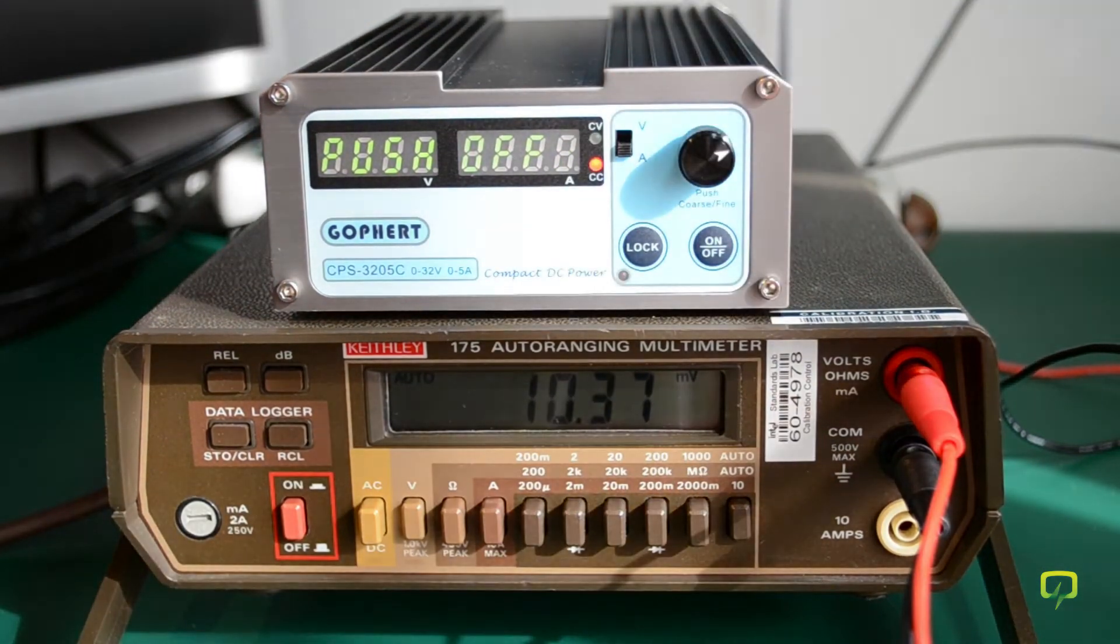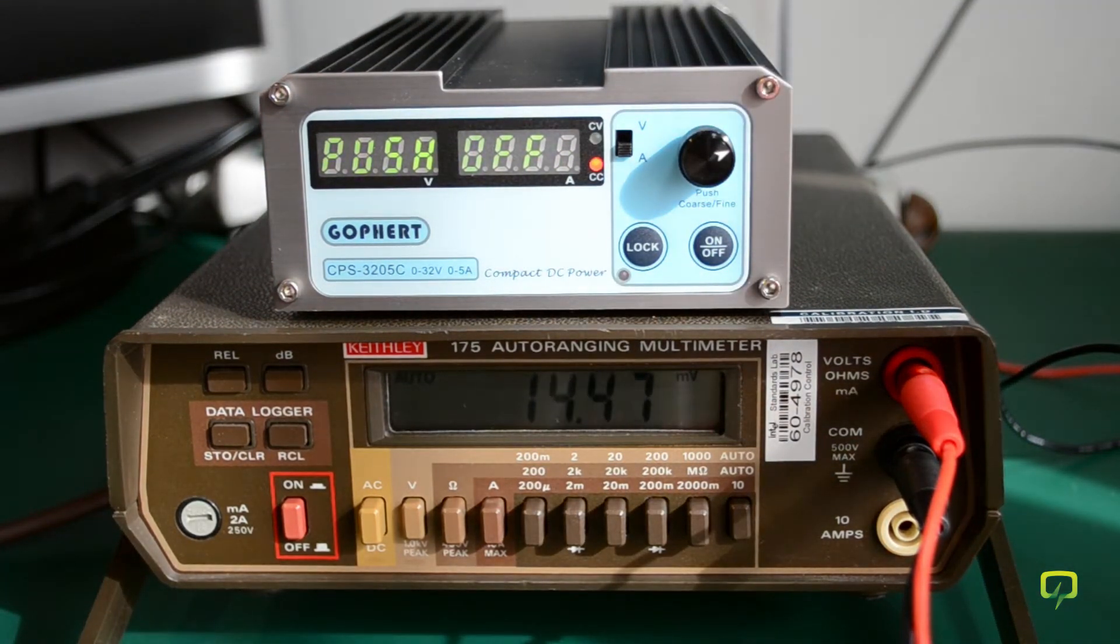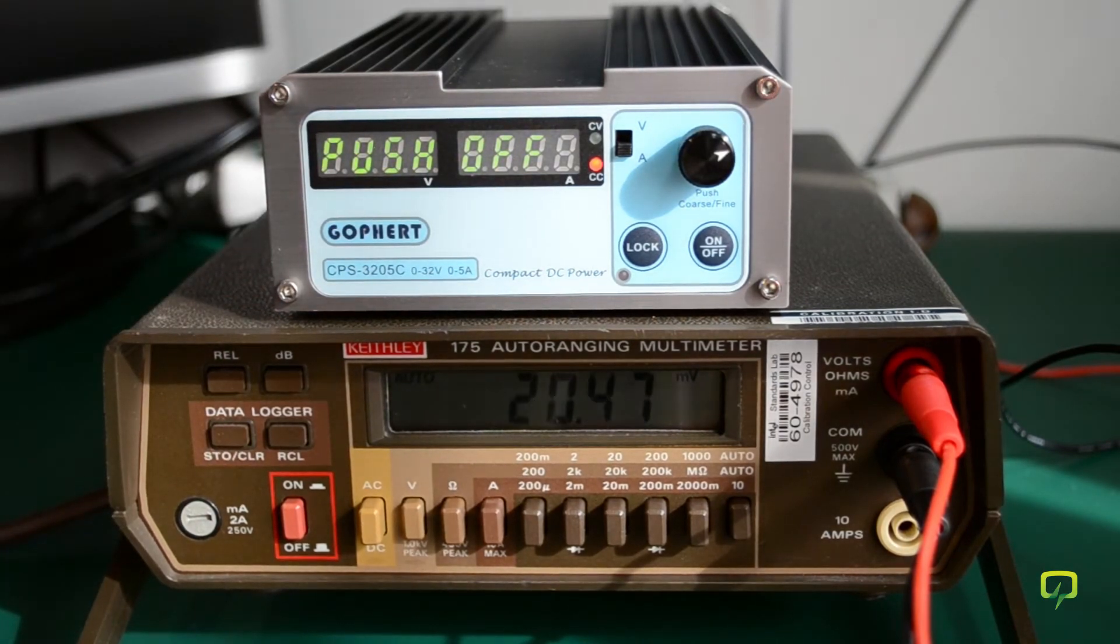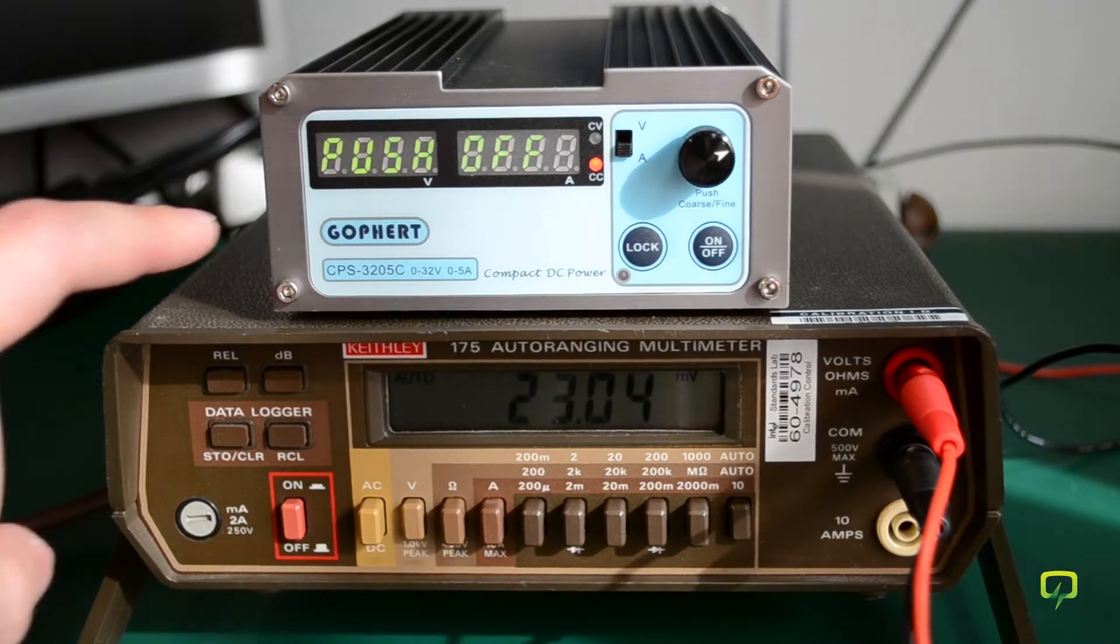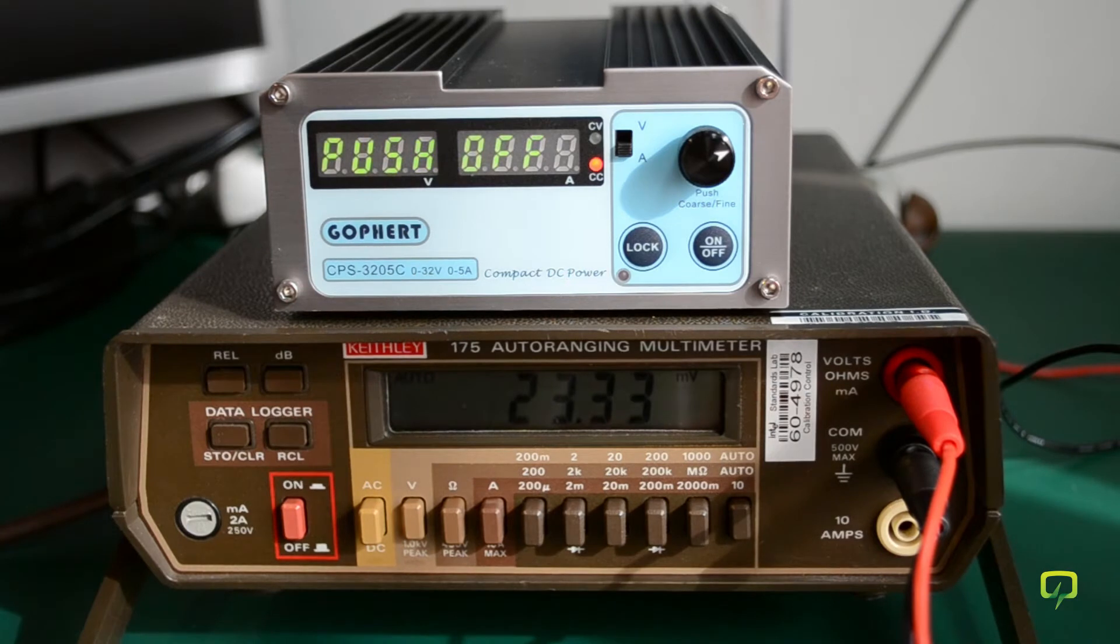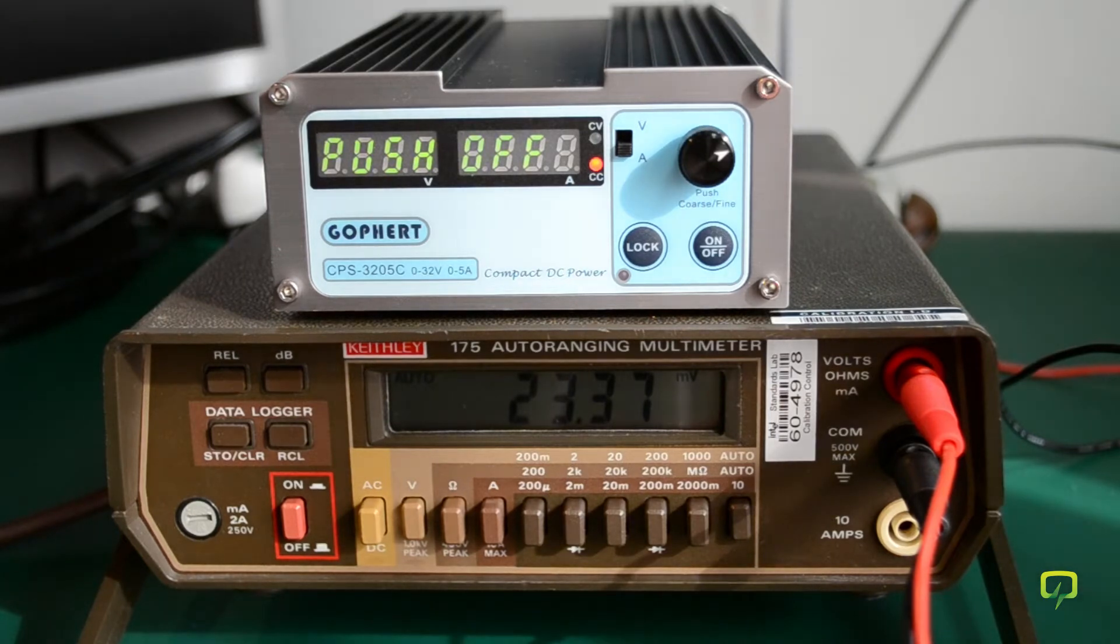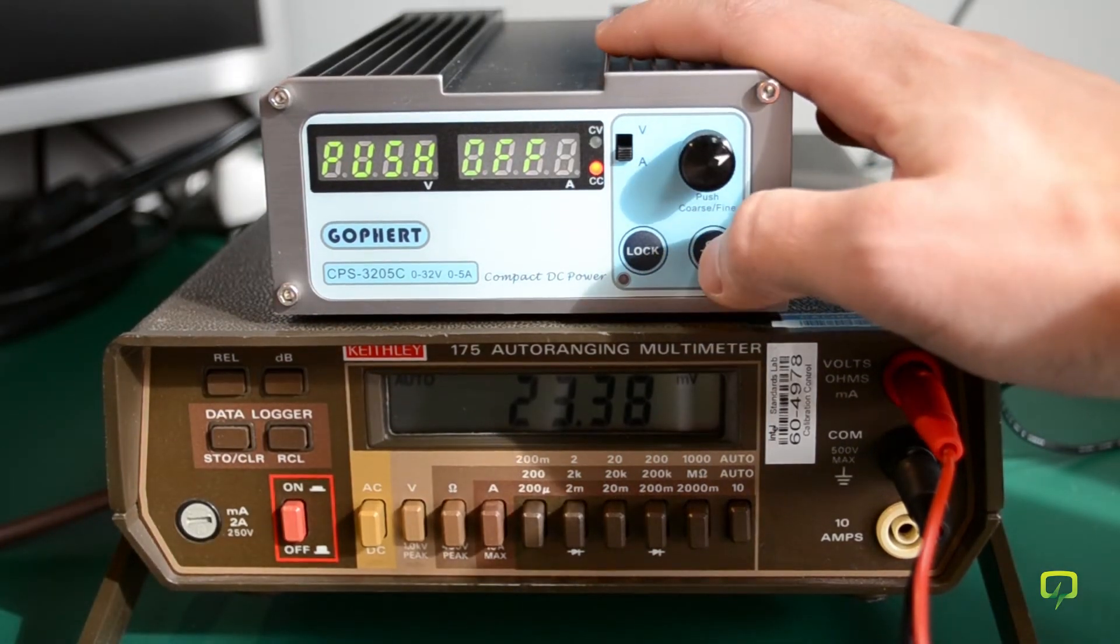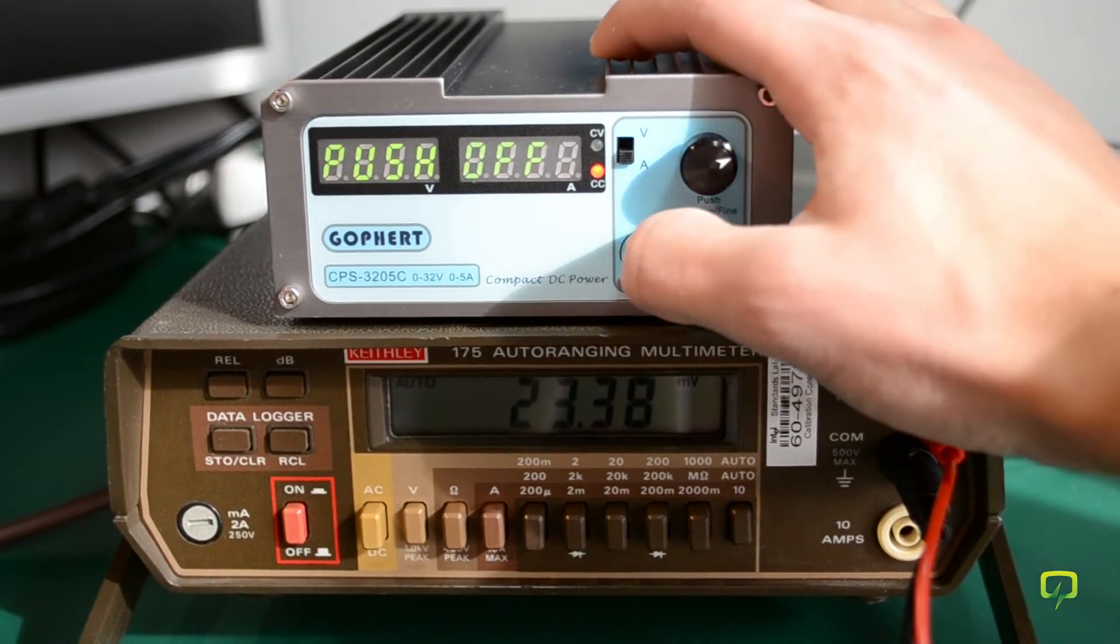At this point, the power supply display will show push off. This might not show very well on camera because I have some bright lighting coming in on the front panel of the power supply and the LEDs might look faded, but it is saying push off. The second step is to press the on/off button one time and the lock button two times.